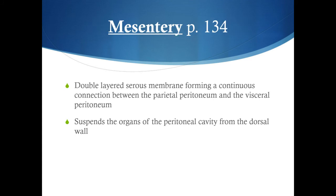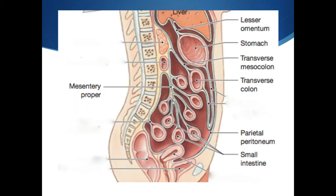We also have something called the mesentery, which is part of the peritoneal membranes. It extends from the dorsal, or posterior, wall and holds the small intestines in place. We can see this membrane coming out from the dorsal wall and extending out to the small intestines, holding them in place — that's called the mesentery.